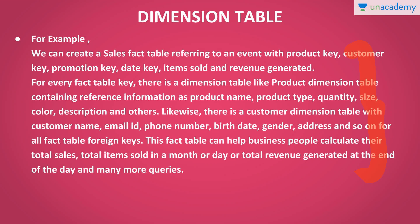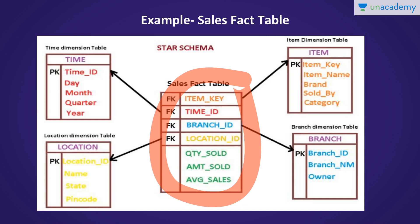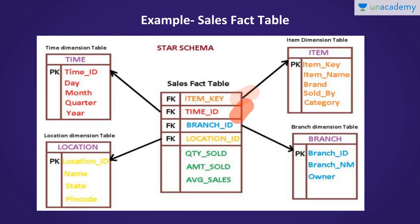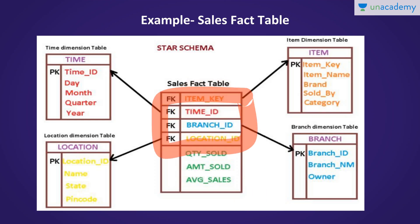This fact table helps business people calculate total sales, total items sold in a month, or total revenue generated at the end of a month or quarter. As you can see in the example, the fact table in the center contains item key, time ID, branch ID, location ID, and numeric values such as quantity sold, amount sold, and average sales. We keep item key as the primary key and the other four as foreign keys referencing other tables — the item, branch, location, and time dimension tables.